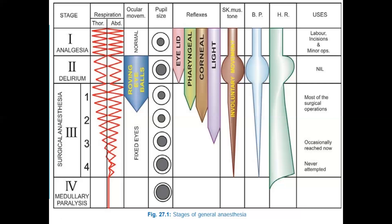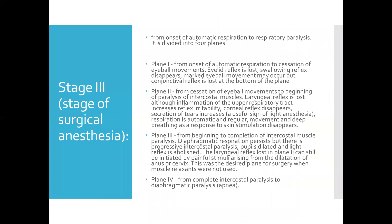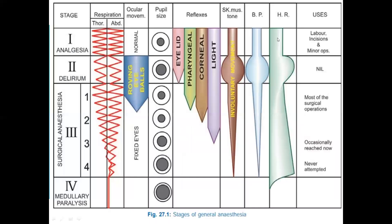In Plane 1, the eyelid reflex is lost and the swallowing reflex disappears. Marked eyeball movement may occur, but the conjunctival reflex is lost at the bottom of this plane. Pupils are slightly constricted compared to Plane 2. Pharyngeal, corneal, and light reflexes are still present. Most surgical operations can begin after this stage.